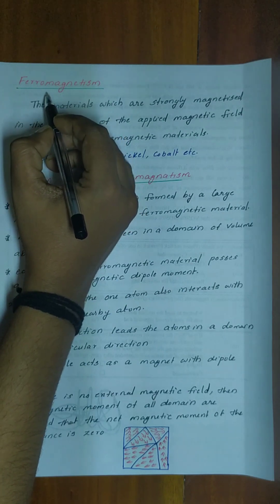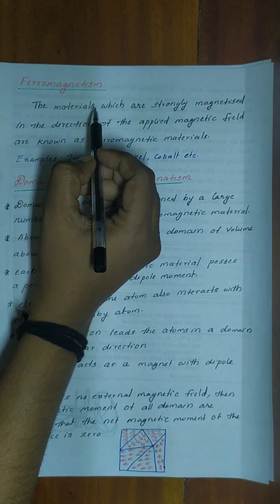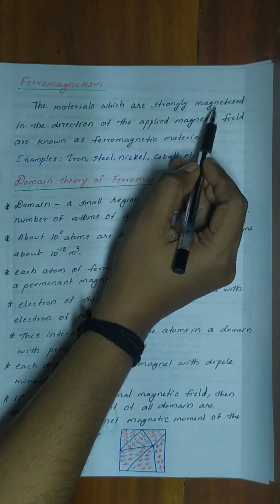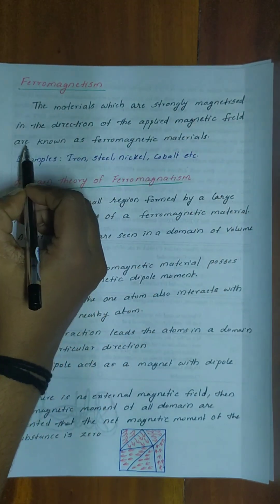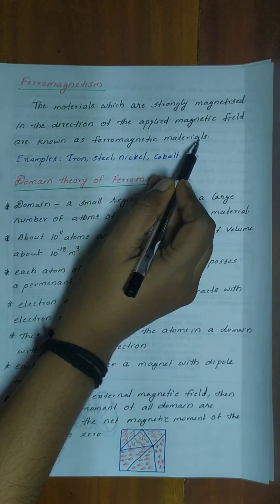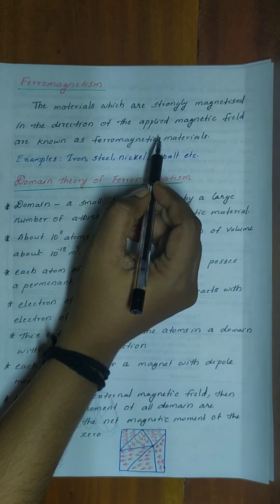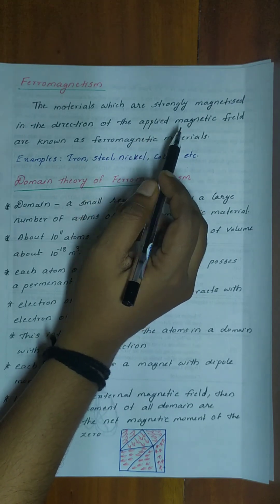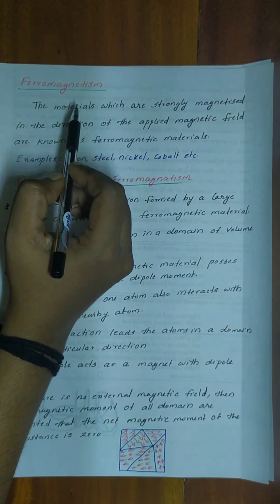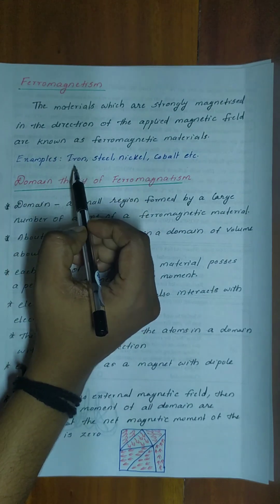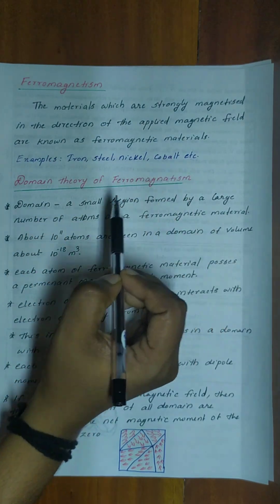Now let's discuss the third classification. The materials which are strongly magnetized in the direction of the applied magnetic field are known as ferromagnetic materials. Examples: iron, steel, nickel, cobalt, etc.